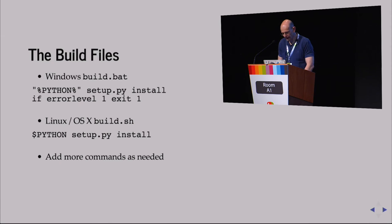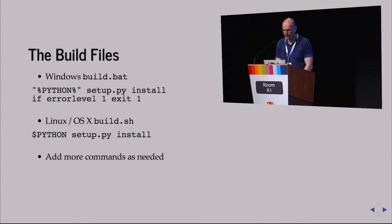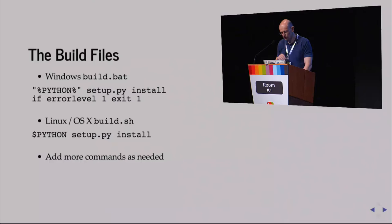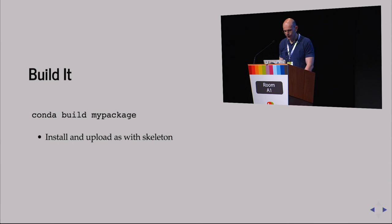The build files typically just call 'python setup.py install' and invoke your normal setup.py. But you can add other commands — for instance a 'pip install something' in the build script. Everything you pip install will be delivered with your own package in the tarball. This is useful if a library isn't available as a Conda package. There are quite a few things you can customize in the build file. Then just run 'conda build my_package' and all the other steps — upload, install from local — are exactly the same.